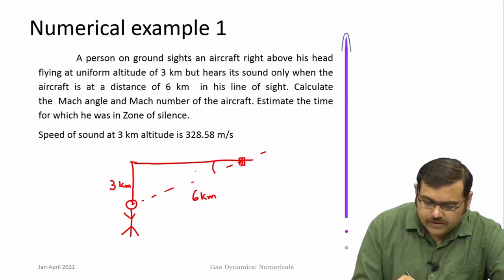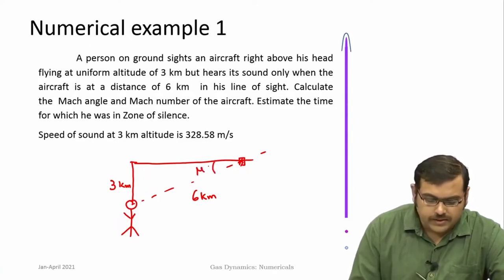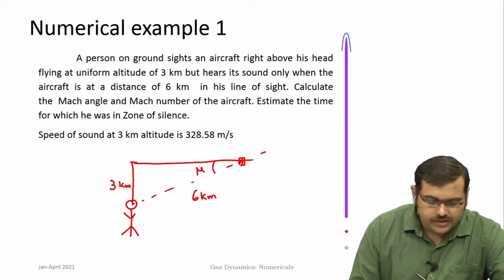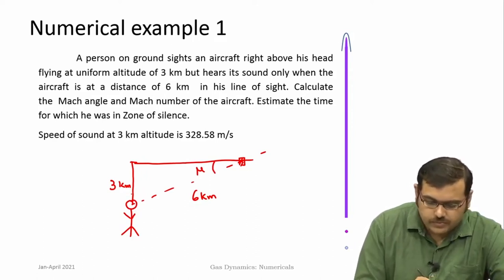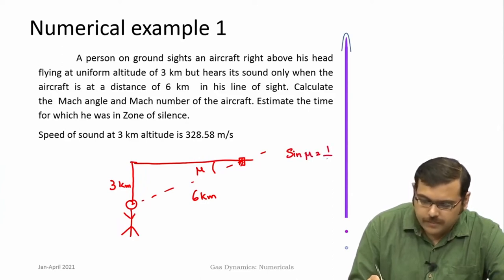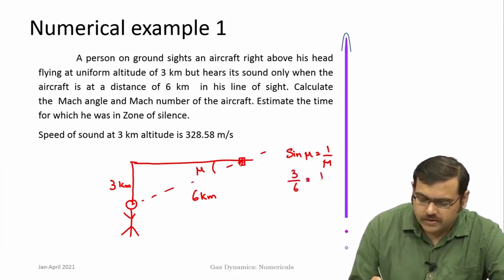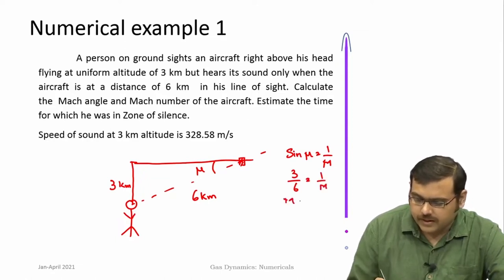That means at that point the Mach wave just passed over that particular point where the person was standing. So this is the Mach angle μ, and we know that the Mach angle is related to Mach number: sin(μ) = 1/M. Directly from the trigonometric relation, sin(μ) = 3/6 = 1/M, so the Mach number is 2.0.